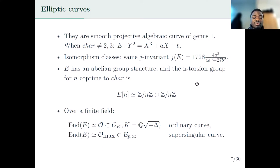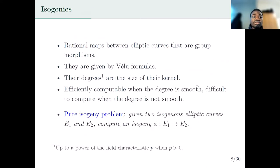Over finite fields, there are only two possibilities for the endomorphism ring of an elliptic curve. This endomorphism ring can be either isomorphic to an order in an imaginary quadratic field — in which case we say the curve is ordinary — or to a maximal order in the quaternion algebra ramified at p and infinity, in which case we say the curve is supersingular. Isogenies are maps between elliptic curves and they are also morphisms with respect to the group structure. Isogenies are given by Vélu formulas and their degree is, up to some precision, the size of their kernel. Isogenies are efficiently computable when their kernels are given and their degree is smooth; we don't know how to compute them efficiently when their degree is not smooth.